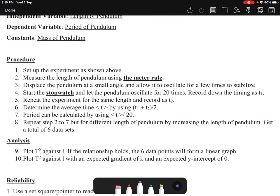I just say set up the experiment as shown above. So measure the length of the pendulum using a meter rule - this is what I call the instrument. And after that, I briefly say I displaced the pendulum at a small angle and allow it to oscillate a few times to stabilize. Then I start the stopwatch - this one is your instrument also.